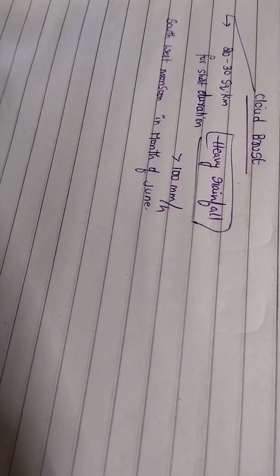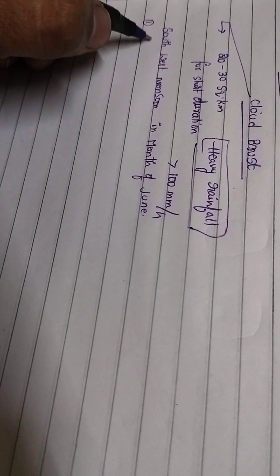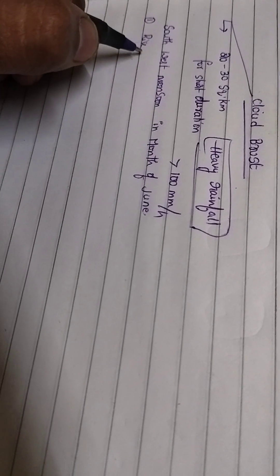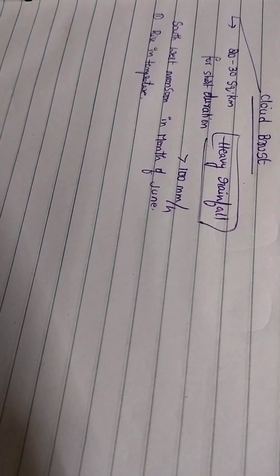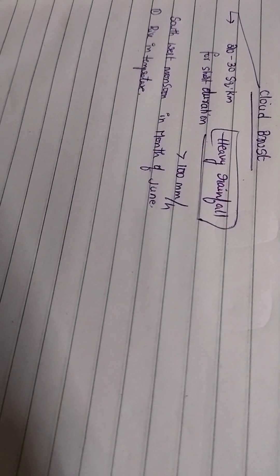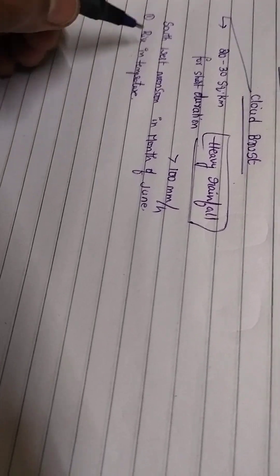Now coming to the factors for occurring of cloud burst. First one is rise in temperature with over-moisture which gets condensed, leading to rapid change in climate. This means heavy rainfall in the form of precipitation due to rise in temperature.